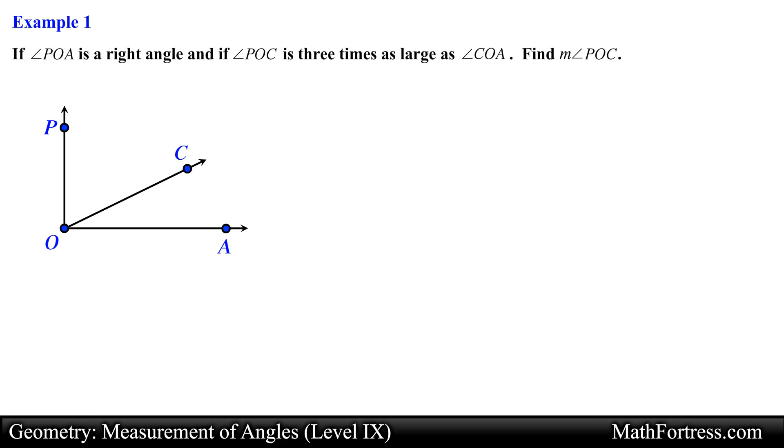Let's take a look at the first example. If angle POA is a right angle and if the measurement of angle POC is 3 times as large as the measurement of angle COA, find the measure of angle POC.